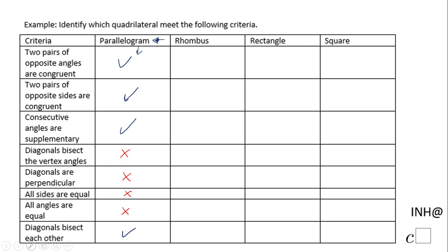Now moving to the second column: the rhombus. Remember, a rhombus is a special type of parallelogram, so these four properties carry over. Diagonals bisect the vertex angles — yes, that works for a rhombus. The diagonals are perpendicular — yes, that also works for a rhombus.